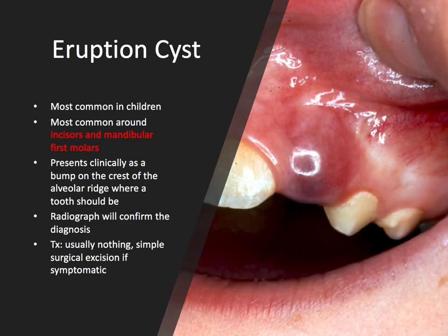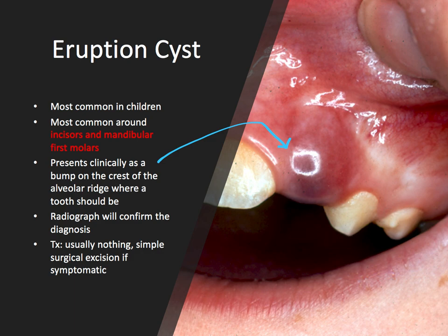Next we have the eruption cyst. This is most common in children and most common around incisors and mandibular first molars. It presents clinically as a bump on the crest of the alveolar ridge where a tooth should be, and a radiograph will confirm the diagnosis — you'll see a tooth hiding underneath this radiolucent cyst. The treatment is usually nothing, because eruption cysts are typically asymptomatic. However, if the cyst is symptomatic, it should be treated with simple surgical excision.